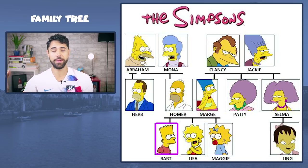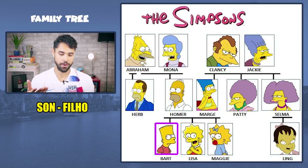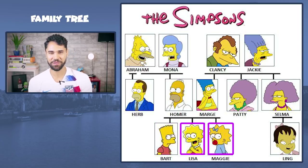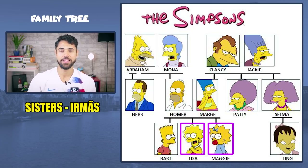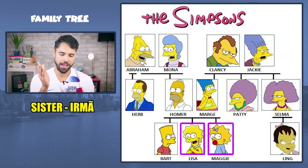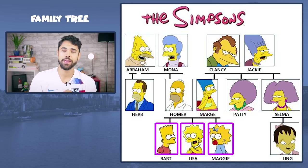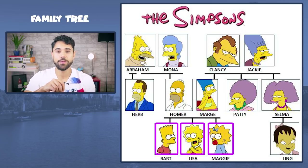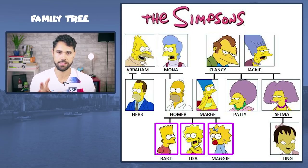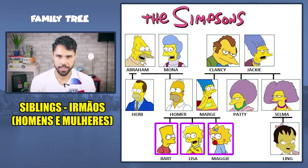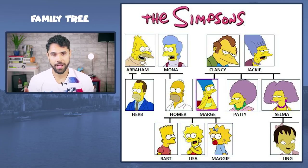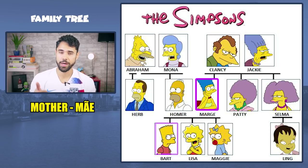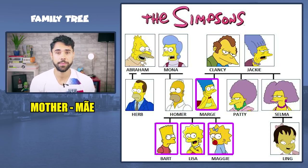O Bart, ele é o quê do Homer e da Marge? Son — é o son, porque ele é o filho. Já a Lisa e a Maggie são sisters — as irmãs. E irmã no singular é somente sister. E o Bart é o brother da Lisa e da Maggie, que é irmão. Você vai falar com a língua entre os dentes mesmo — brother. E os três são siblings, né? Irmãos no geral, sem distinção de sexo. E só pra constar, a Marge ela é a mother do Bart, da Lisa e da Maggie.